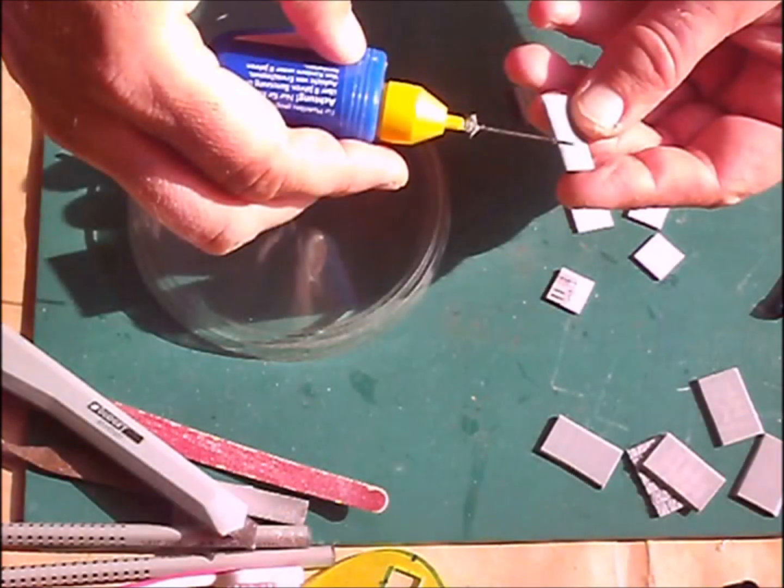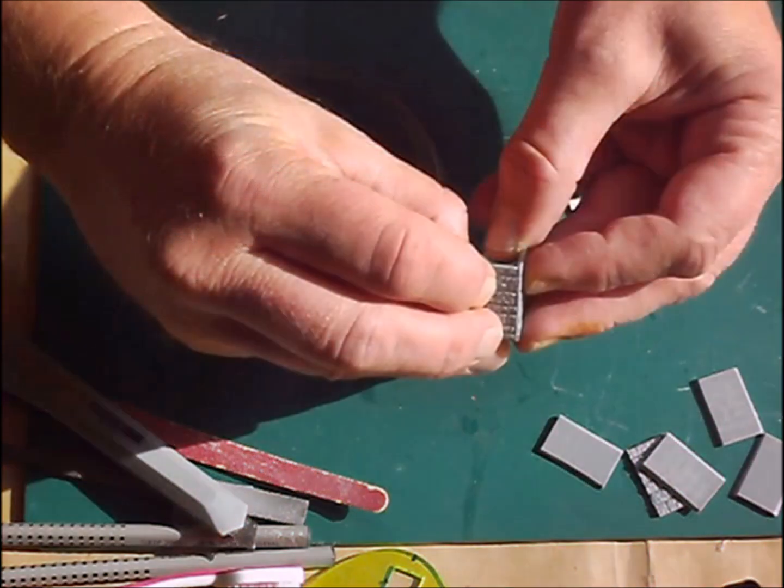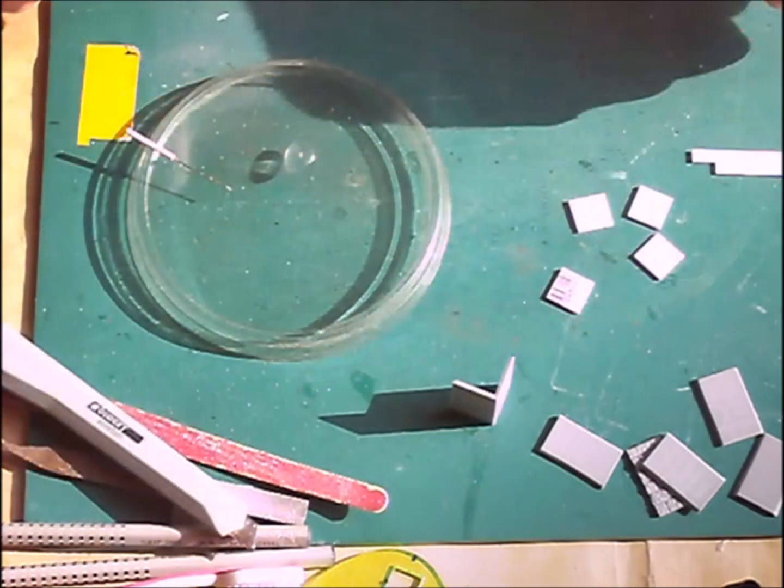For gluing the parts I used Revelle Contacta Professional. I recommend using a slow drying glue so you have got enough time to adjust the parts properly. If you're working with a material you need to use super glue for, choose gel. That cures slowly enough to put the parts together neatly.